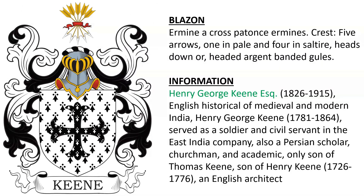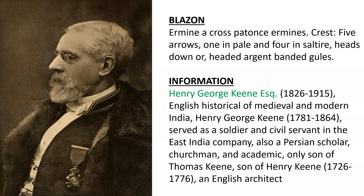Here we have ermine, a cross batons ermine. Crest: five arrows, one in pale and four in saltire, heads down, or headed argent, banded azure. This belonged to Henry George Keene, Esquire, seen here in this photograph, born 1826, an English historian of medieval and modern India. He was the son of Henry George Keene, born 1781, a soldier and civil servant in the East India Company and also a Persian scholar, churchman, and academic.